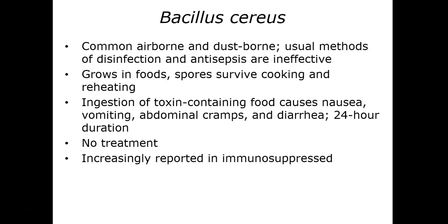Bacillus cereus is the second important pathogenic member. It is a soil inhabitant that produces a food-borne intoxication through enterotoxins. It is associated with food products like cooked rice, potatoes, and meat dishes left at room temperature, allowing the organism to colonize and produce endospores that survive reheating. Ingesting food containing the toxin causes nausea, vomiting, cramping, and diarrhea. It is usually self-limiting, lasting about 24 hours, and there is no documented treatment.